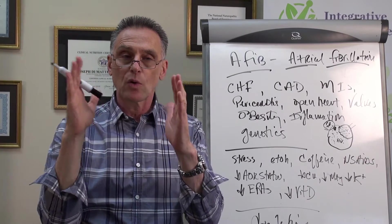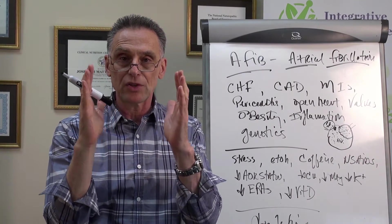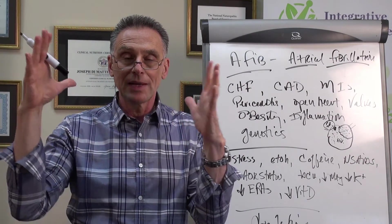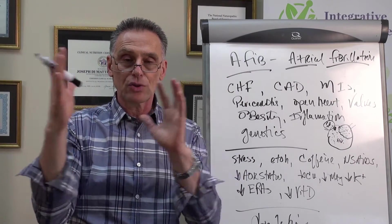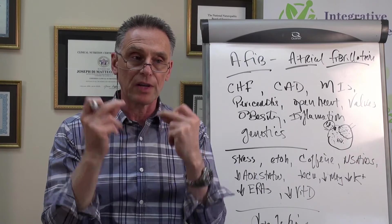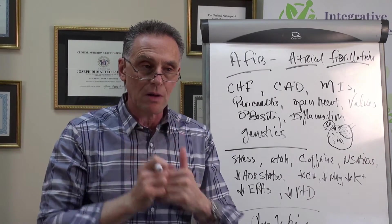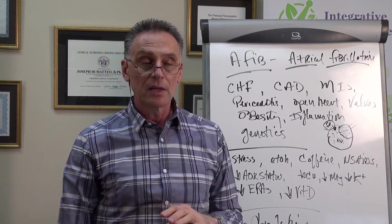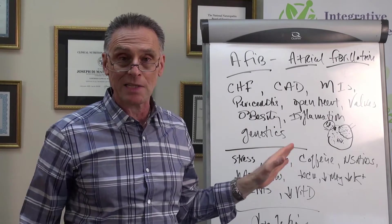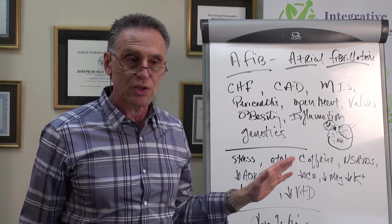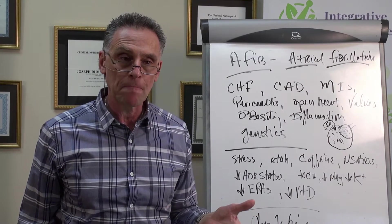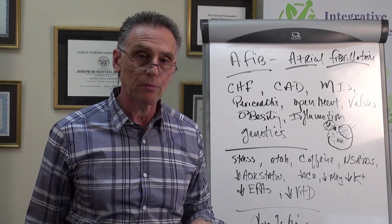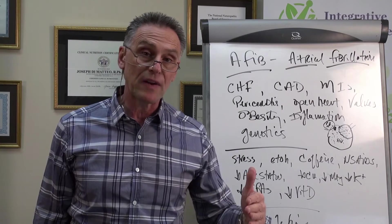But often in this atrium, especially where the pulmonary artery comes in, you have heightened activity where this area of the heart is super sensitized. And I believe I have some theories on this, but it begins to send out its own concurrent stimuli or wave association. So now you've got two competing factors where it's supposed to be coming from the SA node.